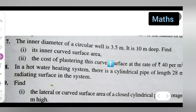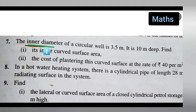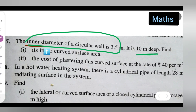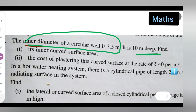The question is: the inner diameter of a circular well is 3.5 meters, and it is 10 meters deep. You have to find its inner curved surface area and the cost of plastering this curved surface at a rate of rupees 40 per meter square.